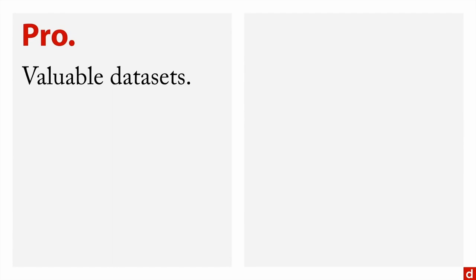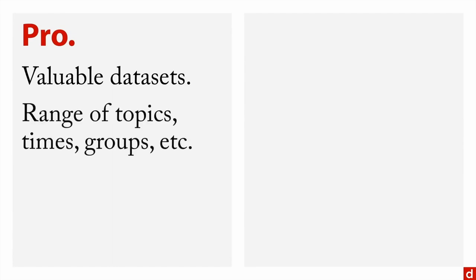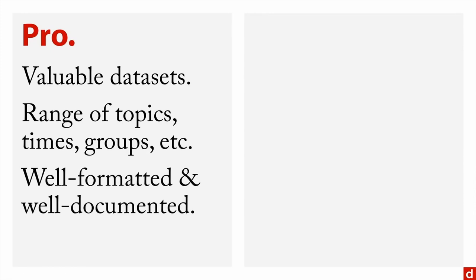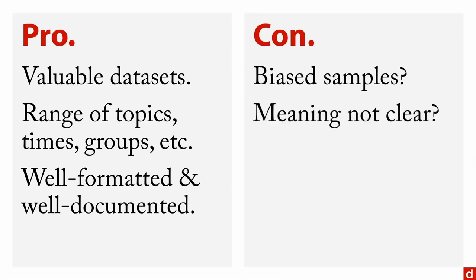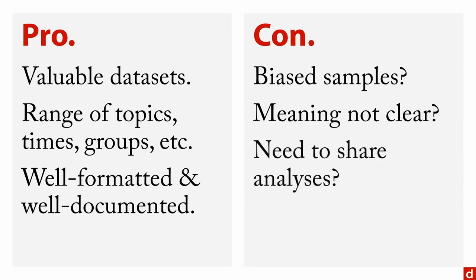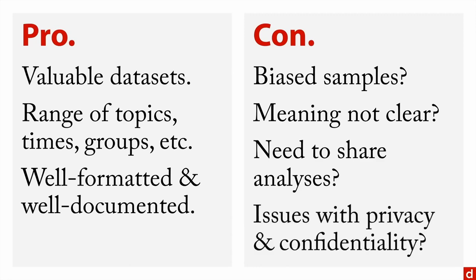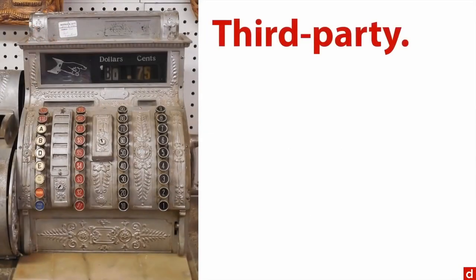There are pros and cons to using open data. Pros: you can get very valuable datasets that cost millions of dollars to gather, a wide range of topics, times, and groups, and the data is often well formatted and documented. Cons: sometimes there are biased samples — for instance, only people who have internet access; the meaning of the data may not be clear; you may need to share your analyses, which creates issues for proprietary research; and there are privacy and confidentiality issues, meaning identifiers are usually absent and you'll have to work at a larger aggregate level.